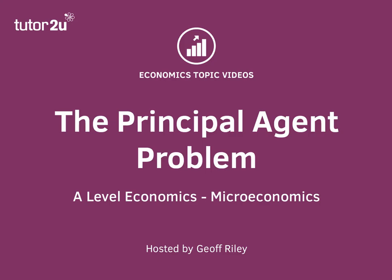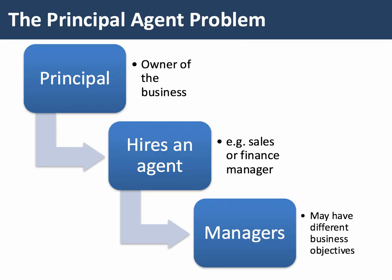In this topic video we're going to focus on something called the principal-agent problem. In most major firms in modern industrial economies, including the United Kingdom and the USA, companies are listed on the stock market and owned by shareholders — we call those people the principals of the business. But day-to-day, these businesses are run by managers, and we call these people agents.